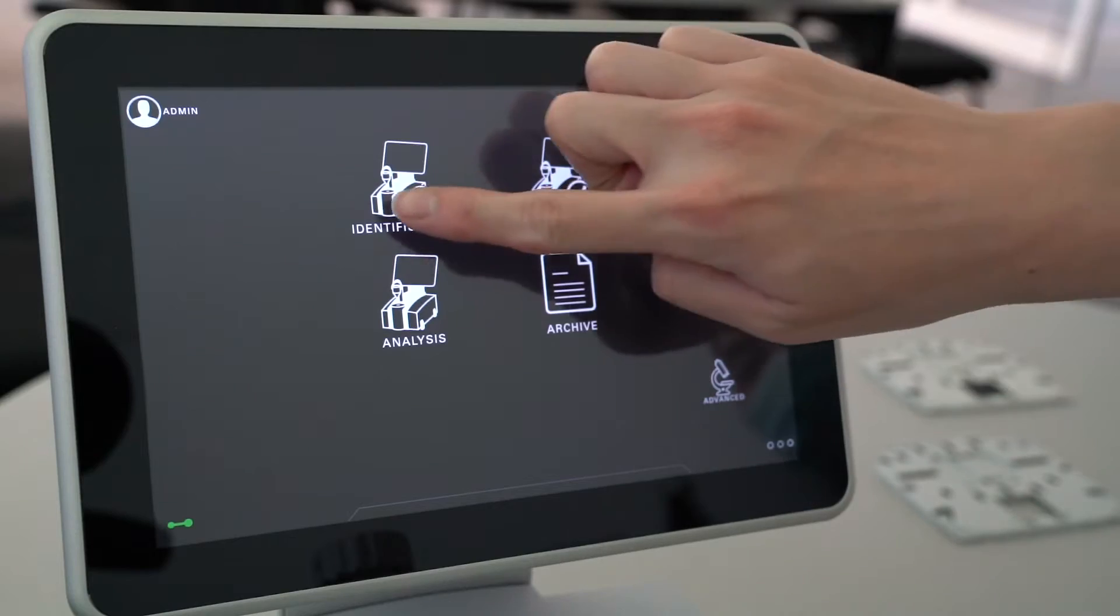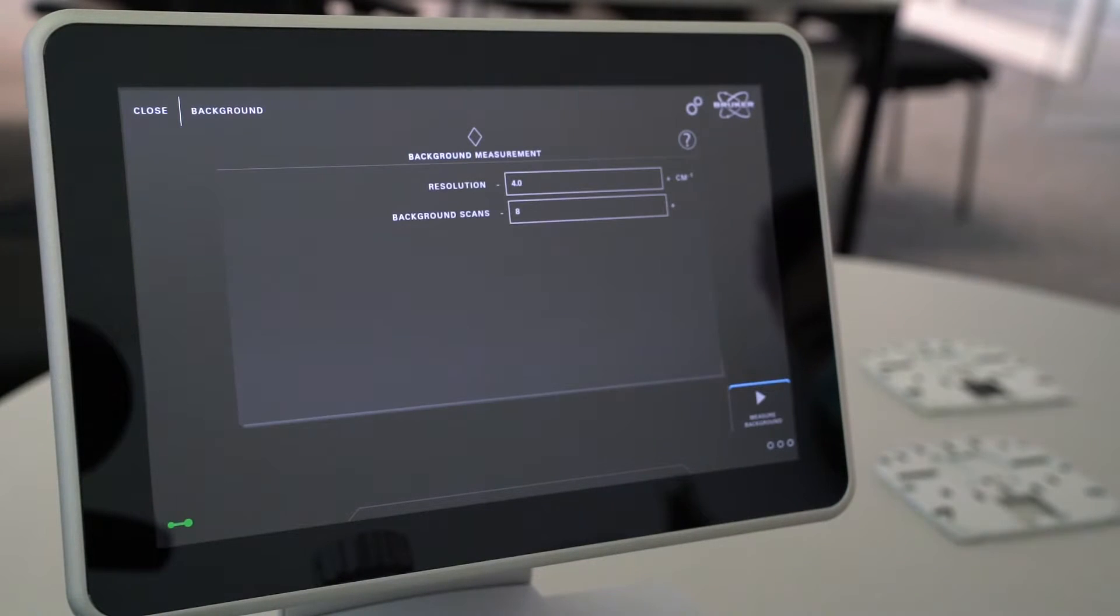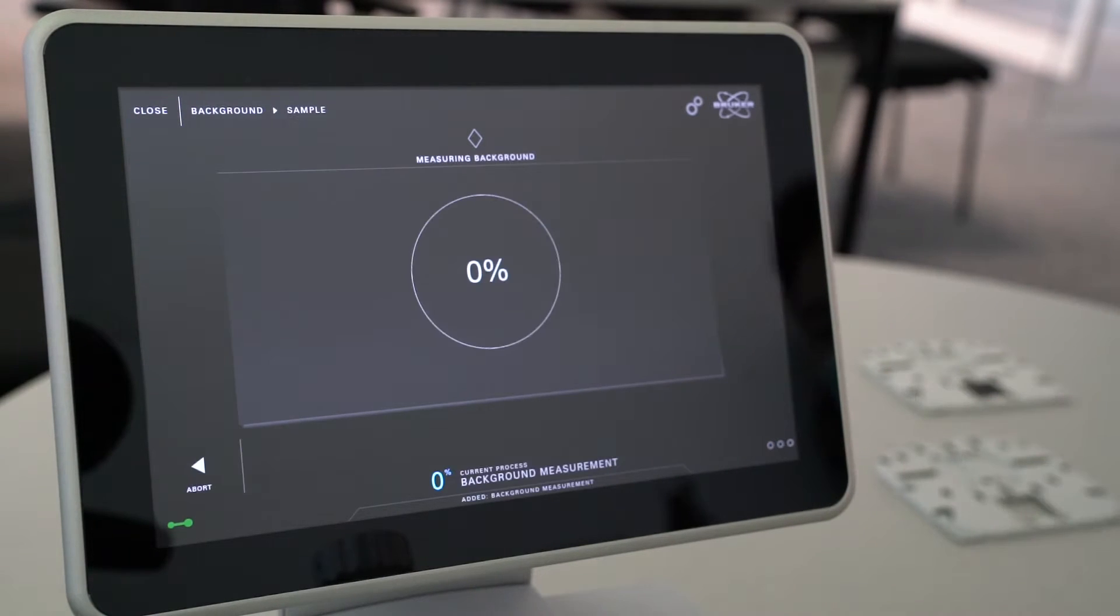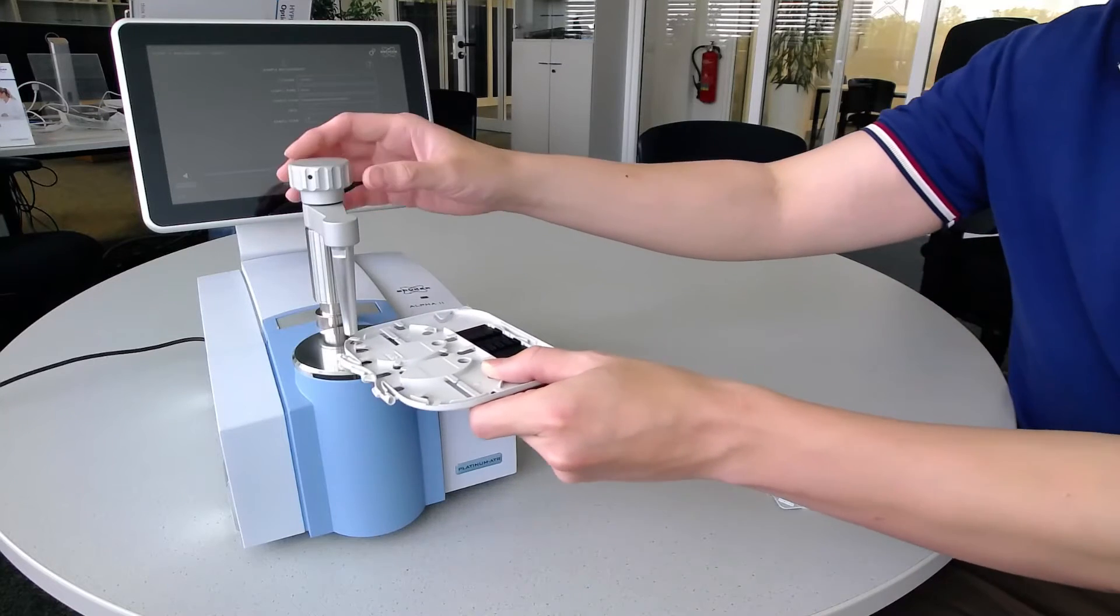To begin, we'll take a background measurement without the sample. After a few seconds, the background measurement will be finished and we place the sample on the spectrometer.